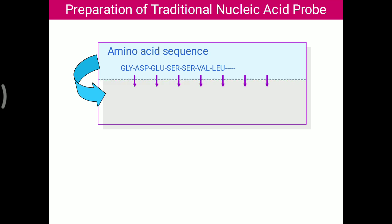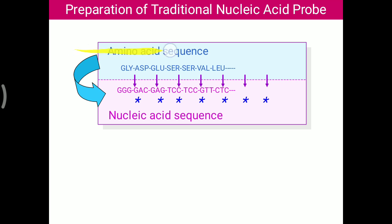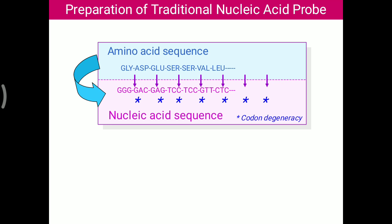How a traditional nucleic acid probe is prepared is explained in this picture. If you need a particular protein with a particular amino acid sequence — for example, glycine, aspartic acid, glutamic acid — then a particular genetic codon can be identified. However, a limitation of this traditional approach is that sometimes an amino acid like glycine has multiple genetic codons due to codon degeneracy, which can limit the probe's specificity.